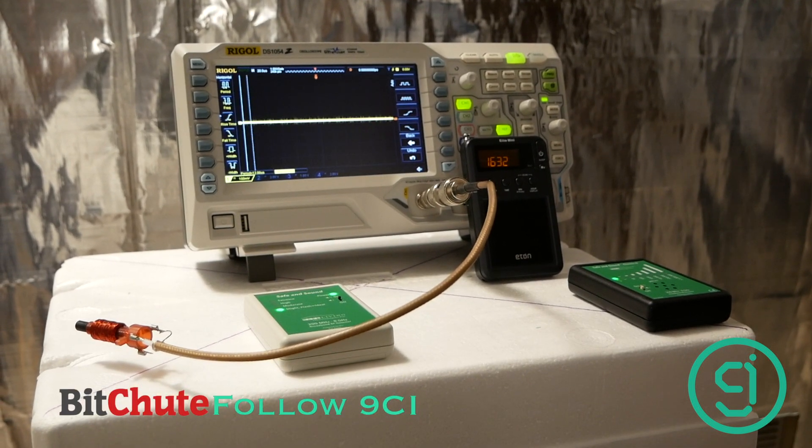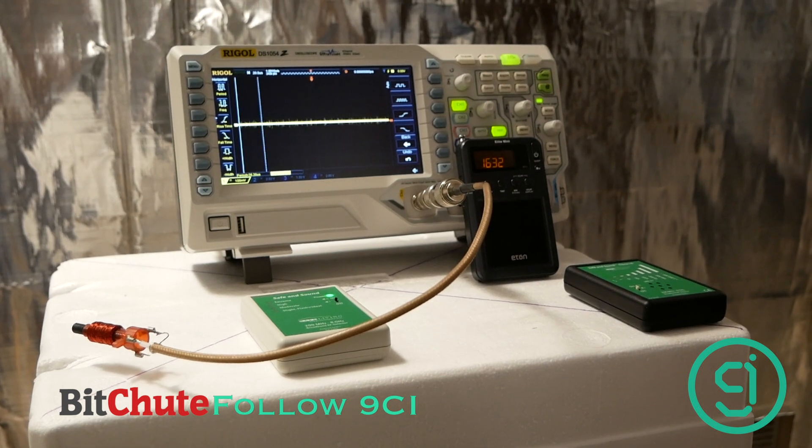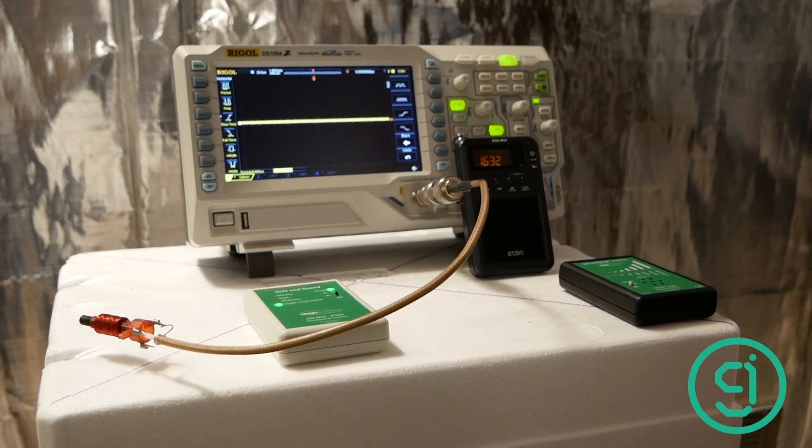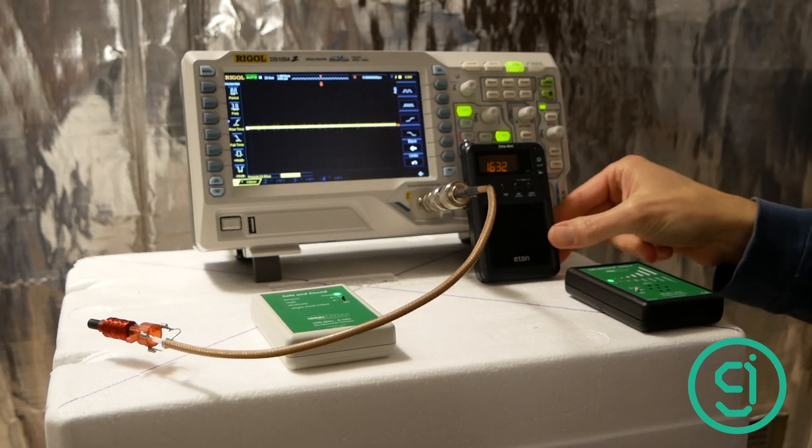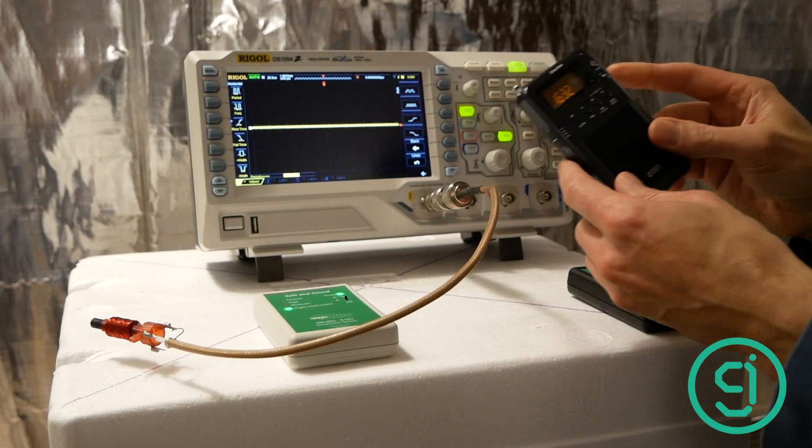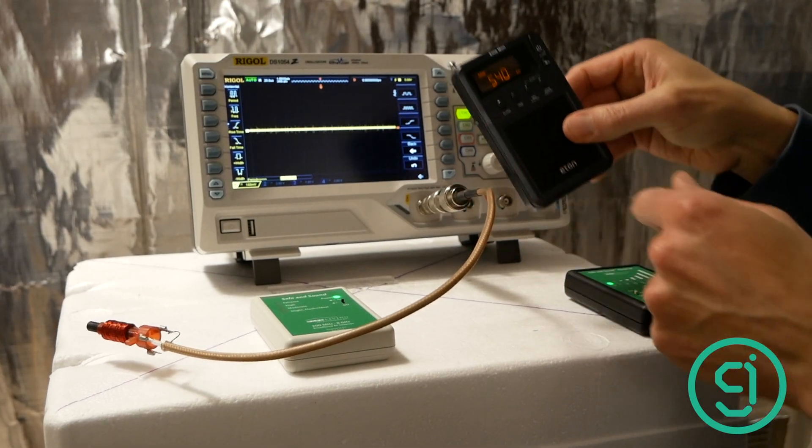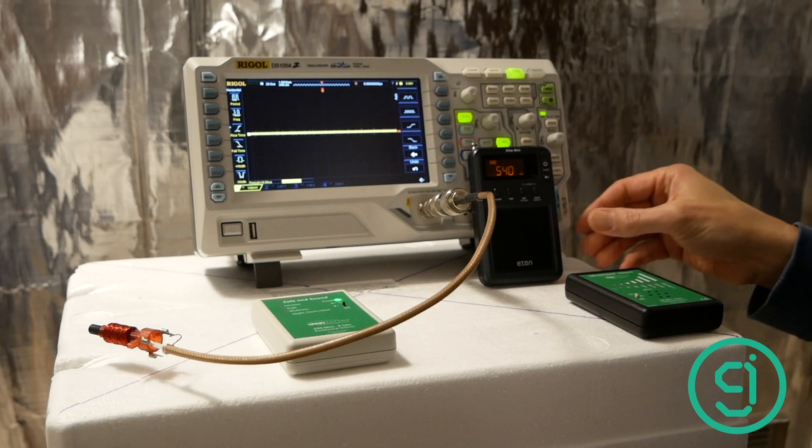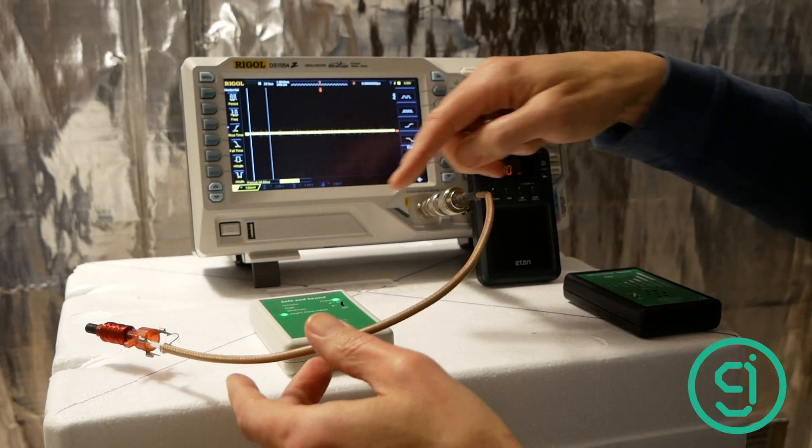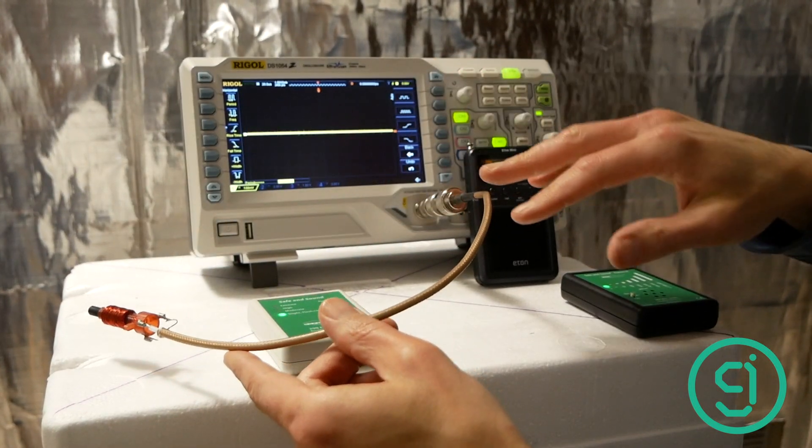And we can demonstrate that very effectively with a couple of tools. One thing, an oscilloscope here, and a little pocket AM radio. Right now I've got the pocket radio set to 540 AM, so we'll use that. And on the oscilloscope I've got a pickup coil connected to it.